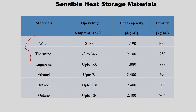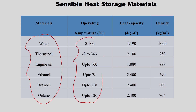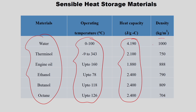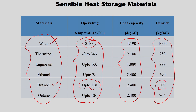These are some sensible heat storage materials: water, therminol, engine oil, ethanol, butanol, and octane. Their operating temperature ranges and heat capacities in J/(g·°C) and densities are given. For an operating range of 0–100°C, water is the obvious choice. If you need up to 120°C, octane or butanol is favorable. Water has the highest heat capacity — meaning the greatest ability to hold heat — and should also be compared by density.